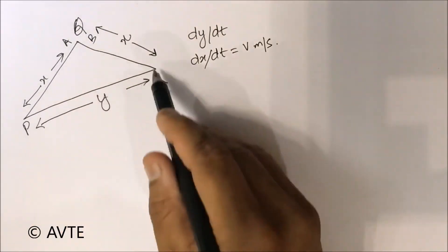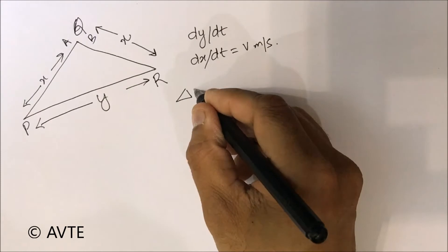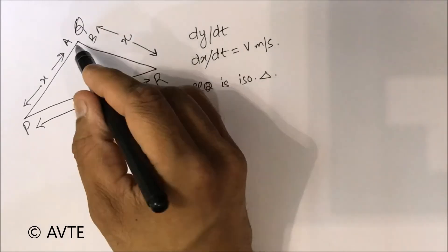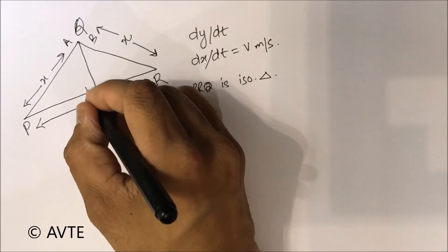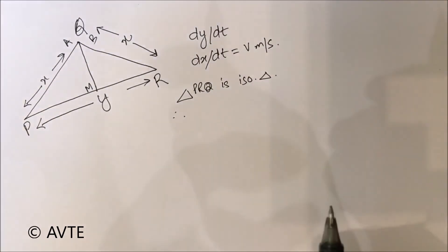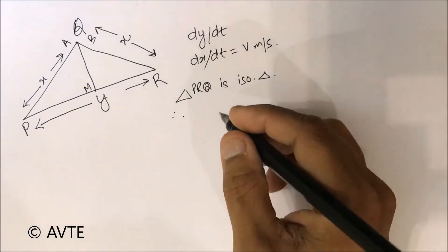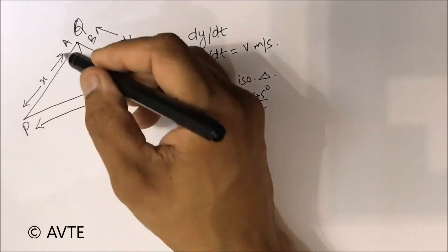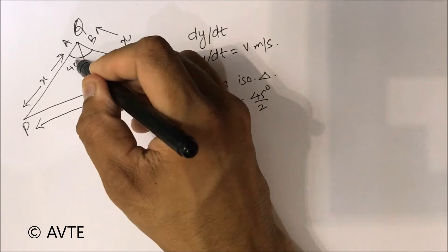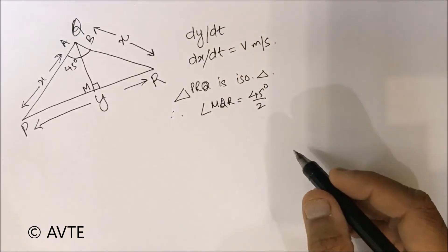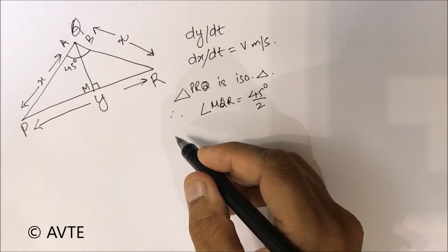Since triangle PRQ is an isosceles triangle, if we drop a perpendicular QM, it will also be a median, because in an isosceles triangle the median is the altitude to the base. Therefore angle MQR will be 45/2 degrees, since the angle between the roads is 45 degrees. This angle at M is 90 degrees, so we concentrate on triangle MRQ.